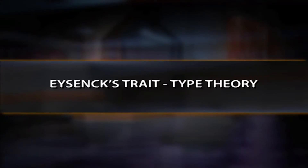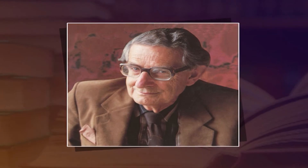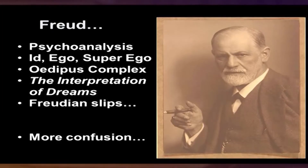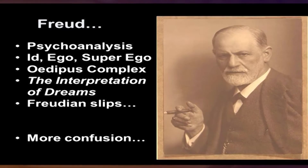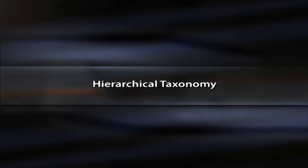Our next focus is Eysenck's trait-type theory. Hans Jürgen Eysenck (H.J. Eysenck), who lived from 1916 to 1997, was a British psychologist known for his theory of human personality. He suggested that personality is biologically determined and arranged in a hierarchy consisting of types, traits, habitual responses, and specific responses. Eysenck did not believe in Freudian psychoanalysis, considering it rather unscientific. According to him, personality can be studied from either temperamental or cognitive aspects, or both, and he focused on the temperament aspect in his PEN model.